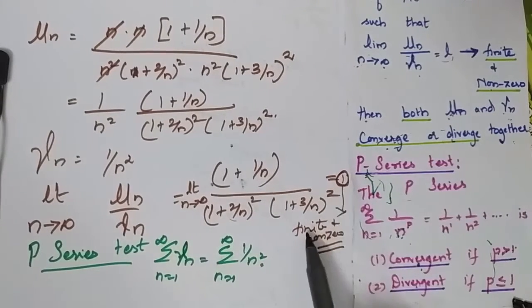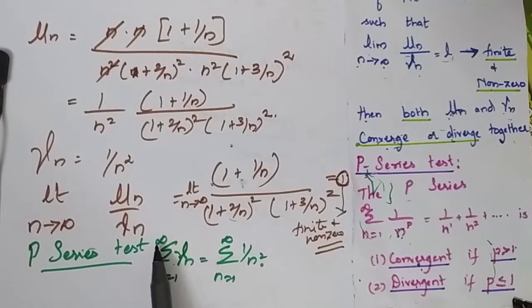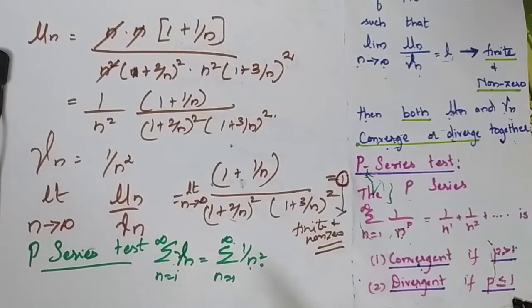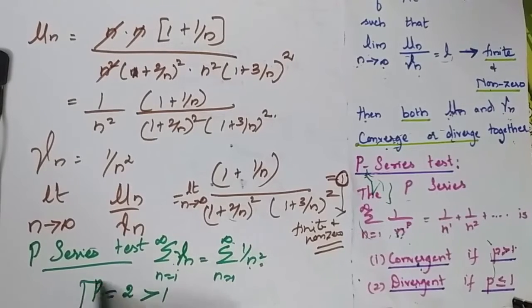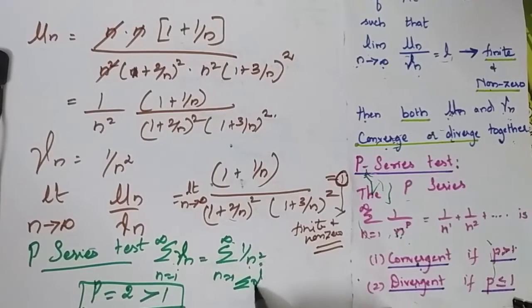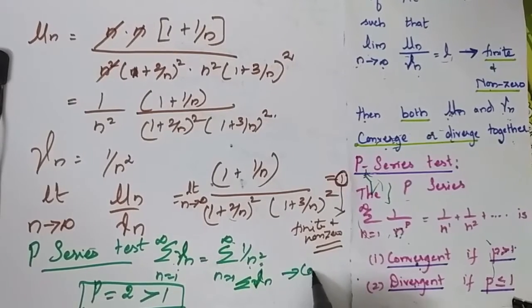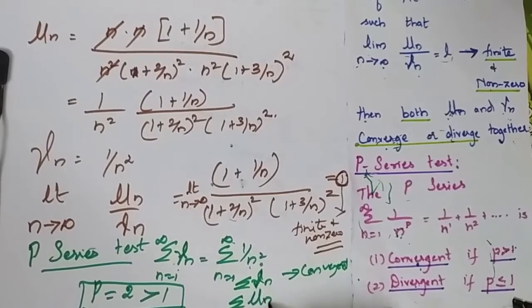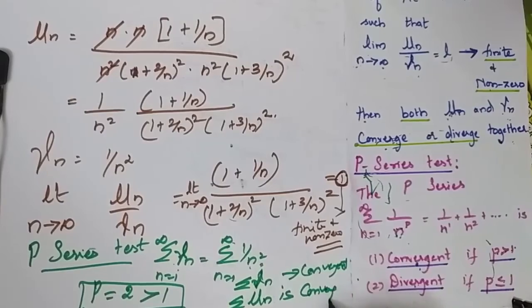Since the limit is 1, which is finite and non-zero, I apply the p-series test for the summation from n = 1 to infinity of v(n), where v(n) = 1/n². Comparing with this, the value of p is 2, which is greater than 1. When p is greater than 1, the series is convergent. So summation v(n) is convergent, which implies summation u(n) is also convergent.